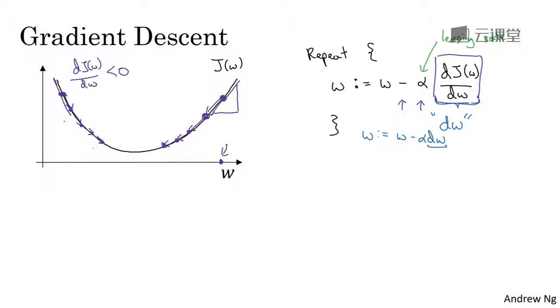So that hopefully, whether you initialize on the left or on the right, gradient descent will move you towards this global minimum here. If you're not familiar with derivatives or with calculus and what this term dj of w, dw means, don't worry too much about it. We'll talk some more about derivatives in the next video.